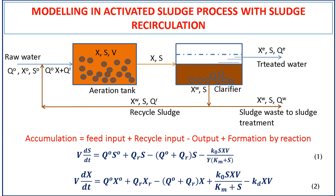Accumulation equals feed input plus recycle input minus output plus formation by reaction. The substrate mass balance is: V·dS/dt = Q0·S0 + Qr·S − (Q0 + Qr)·S − (k0·S·X·V) / (Y·(Km + S)).